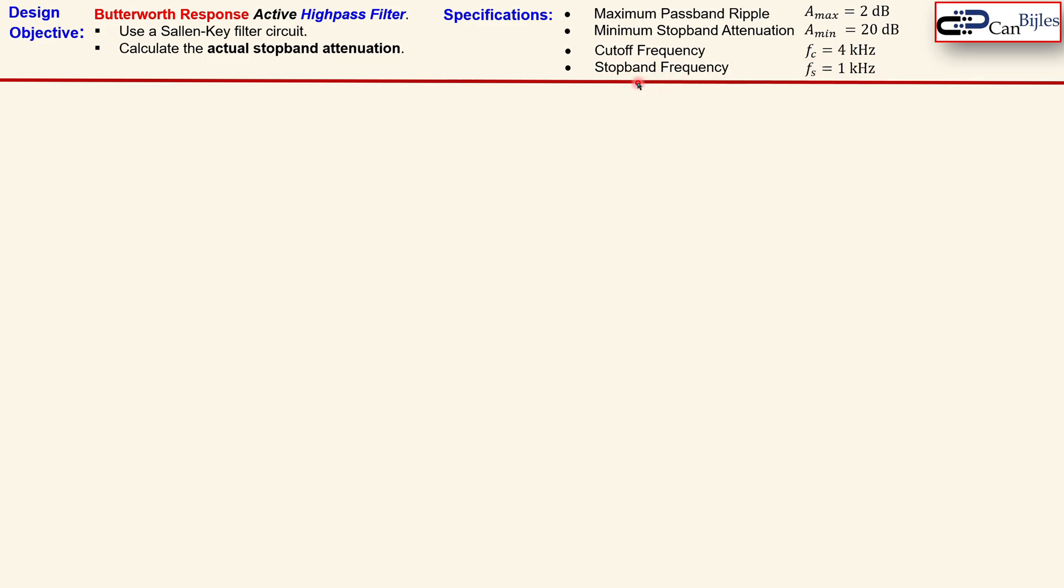So that means actually the following. At this frequency, 1 kHz, we need to have an attenuation of 20 dB minimum. So we can go above but this is the minimum required according to this design. So let's see what we need to do in this example.